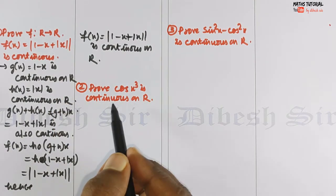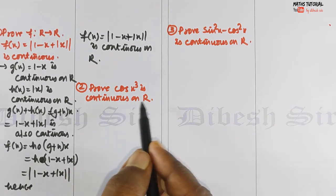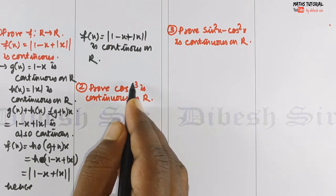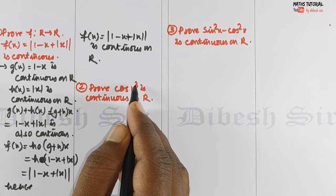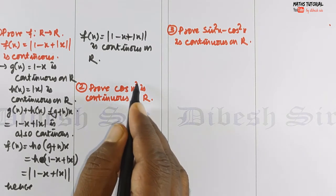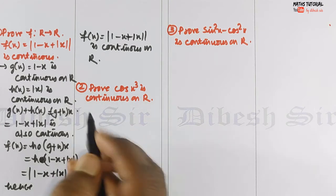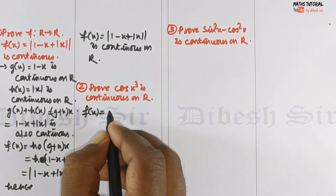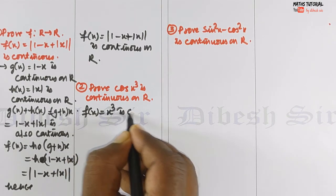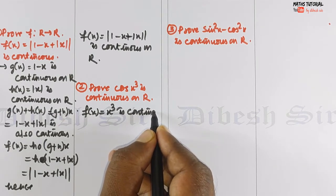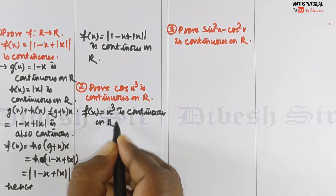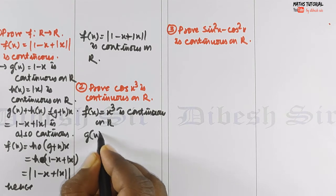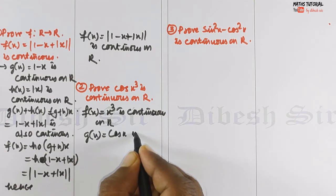Next question: prove that cos(x³) is continuous on R. We take the first part as f(x) and the second as g. So f(x) = x³ is continuous on R because it is a polynomial function, so it is clearly continuous. And g(x) = cos x is also continuous on R.